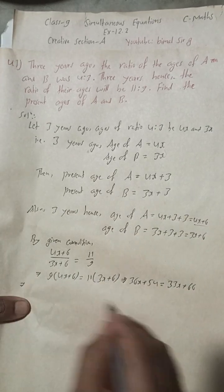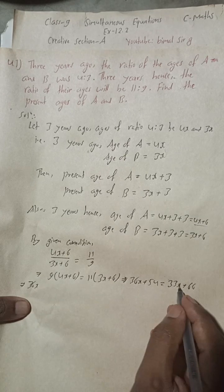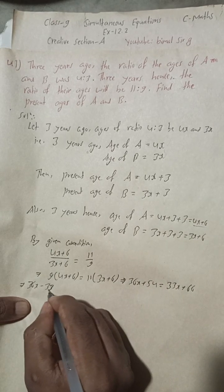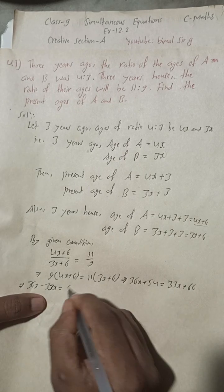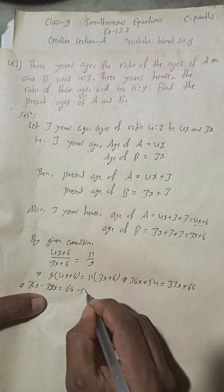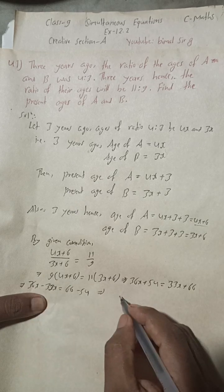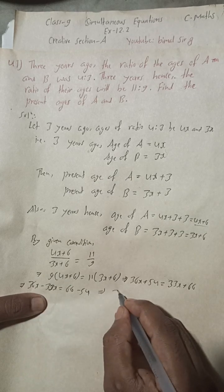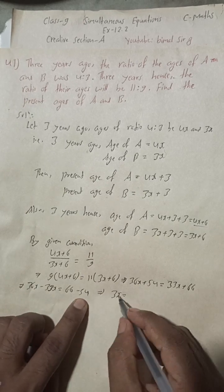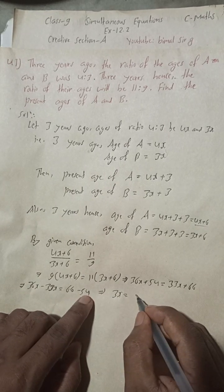Rearranging: 36X minus 33X equals 66 minus 54. So 3X equals 12.